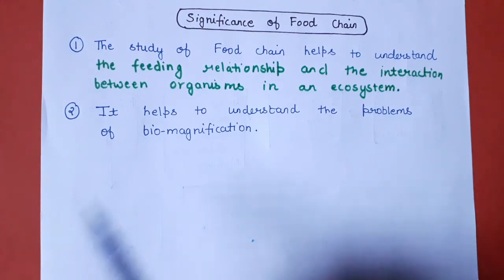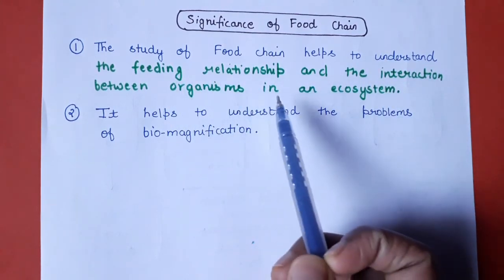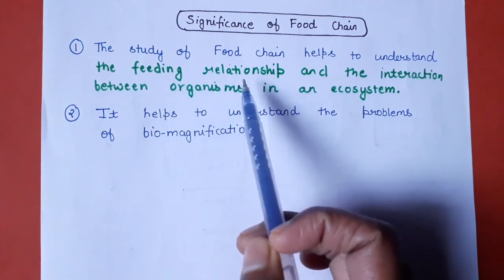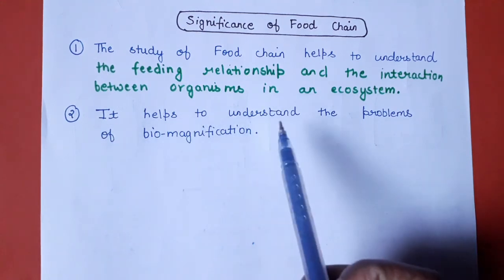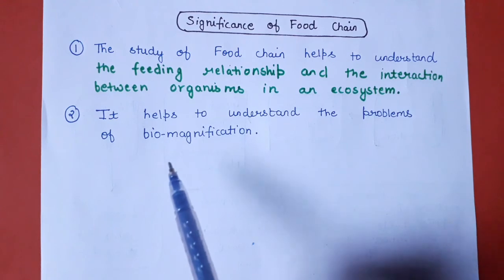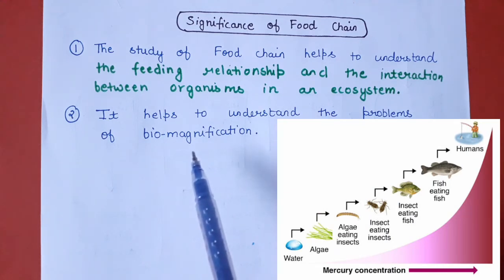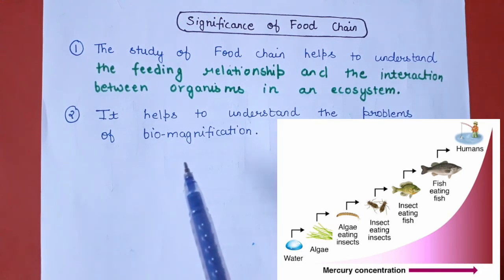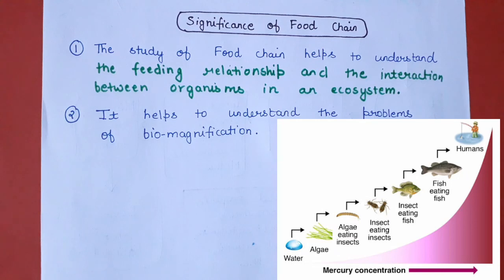Ab hum baat karte hain significance of food chain ki. The study of food chain helps to understand the feeding relationships and interactions between the organisms in an ecosystem — kaun sa organism kis organism ko feed kar raha hai aur unke beech kya interaction hai. Iske alawa it helps to understand the problems of biomagnification. Biomagnification ek process hai jismein organism ki body mein koi bhi harmful substance bahut zyada amount mein concentrate ho jaata hai — jaise large fishes ki bodies mein heavy metals ya toxic components concentrate hote chale jaate hain. Isko samajhne ke liye food chain ke baare mein jaankari hona aavashyak hai.